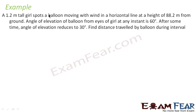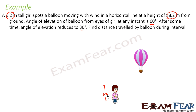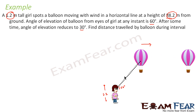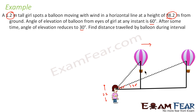Let us take a new example: a 1.2-meter tall girl spots a balloon moving with the wind in a horizontal line at a height of 88.2 meters from the ground. Note that both the height of the girl and the height of the balloon are given. The angle of elevation of the balloon from the girl's eyes at one instant is 60 degrees; after some time it becomes 30 degrees. We have to find the distance traveled by the balloon during this interval.